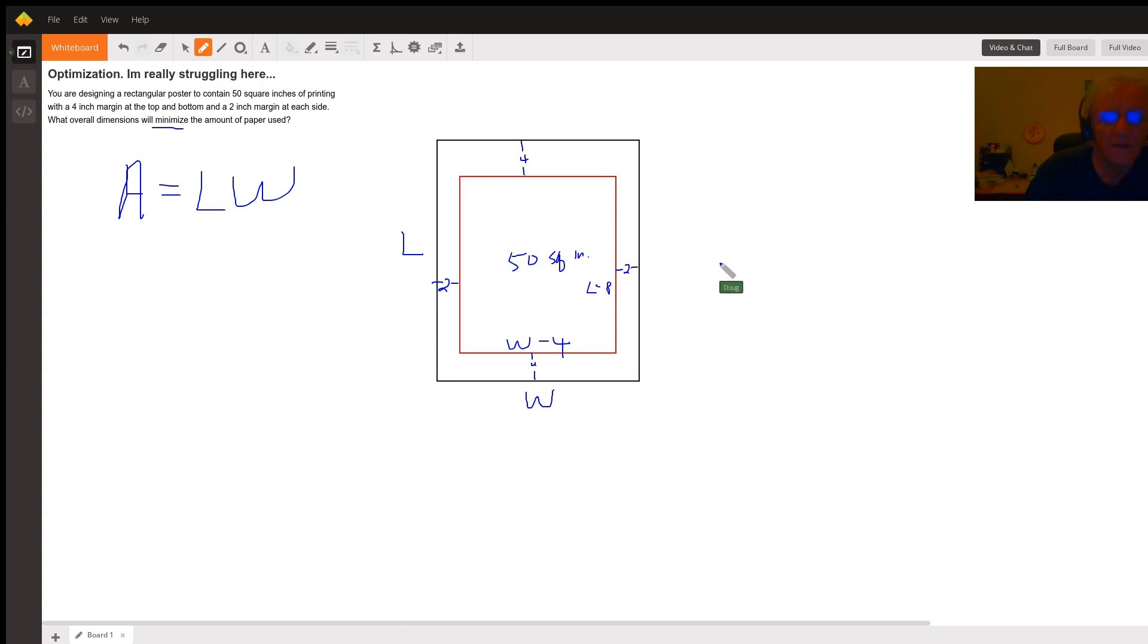And we can establish a relationship between L and W by realizing that L minus 8 times W minus 4 gives us 50.